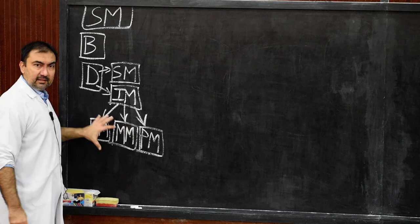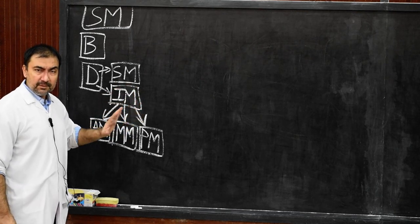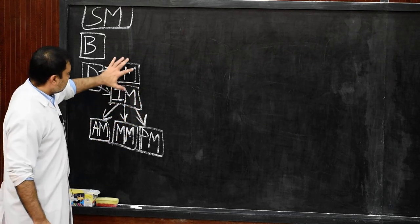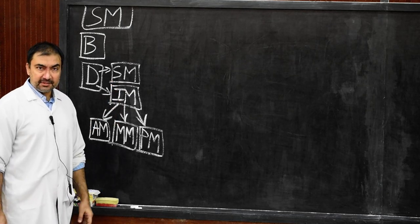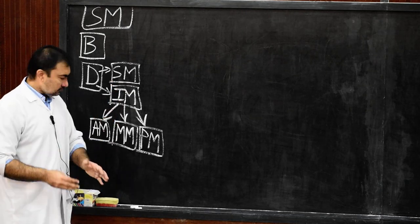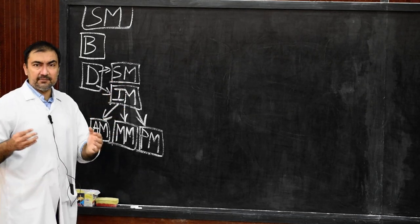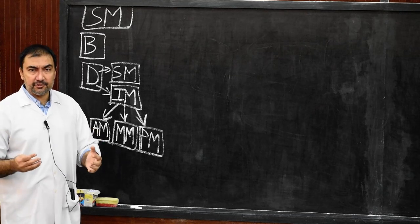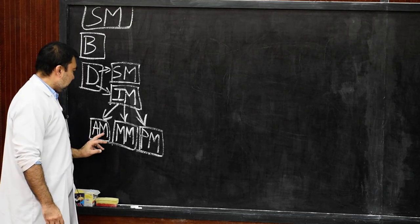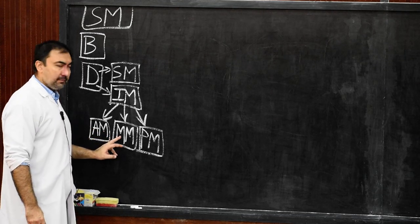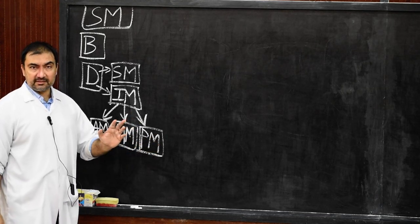First we understand the division: the division of mediastinum will be superior mediastinum and inferior mediastinum. Further, the inferior mediastinum is divided into three different parts — anterior mediastinum, middle mediastinum, posterior mediastinum.